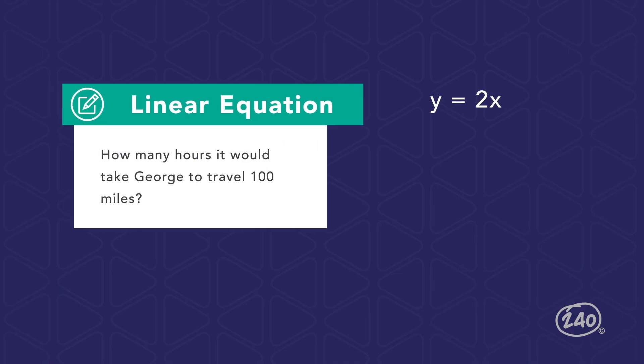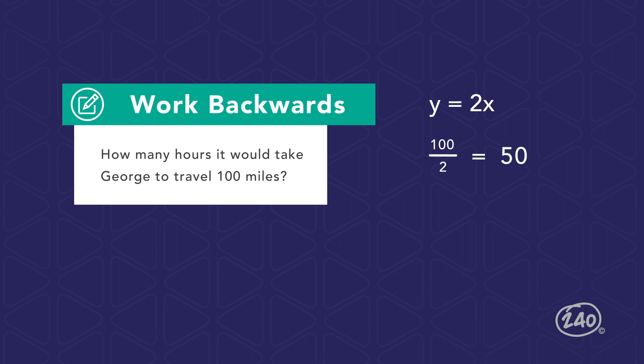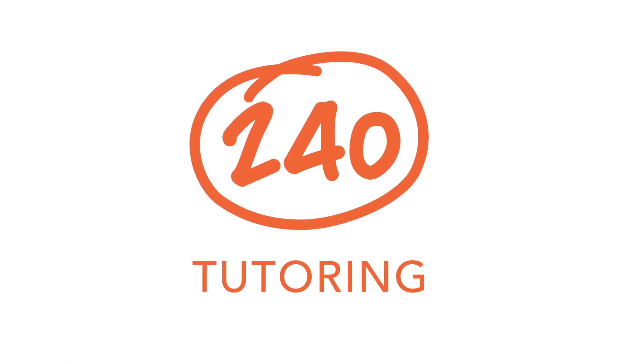So how long would it take George to travel 100 miles? The equation y equals 2x represents how many miles y George can walk in any number of hours x. Since 100 miles is a y-value, substitute 100 for y: 100 equals 2x. Dividing both sides by 2 gives x equals 50 hours. Another way is to work backwards, asking what number times 2 equals 100. Since 100 divided by 2 equals 50, we know 50 times 2 equals 100. Now that x equals 50 when y equals 100, it will take 50 hours for George to walk 100 miles.